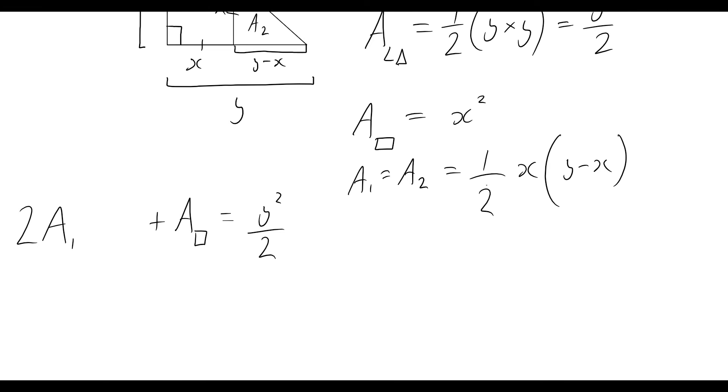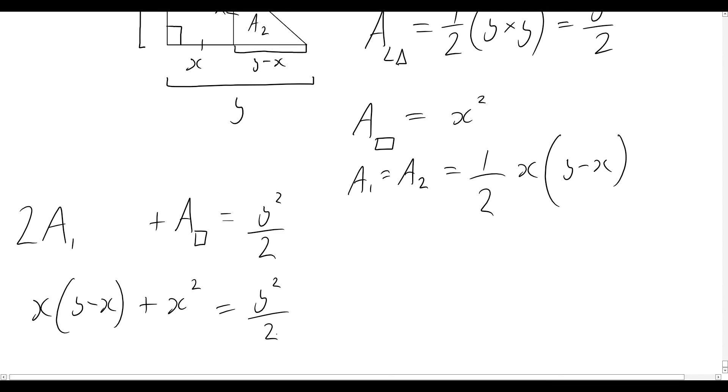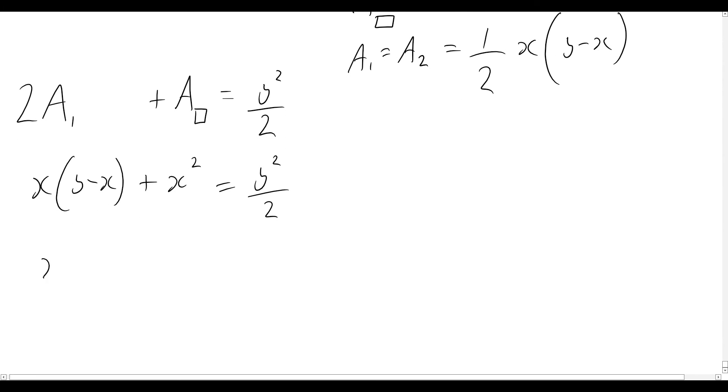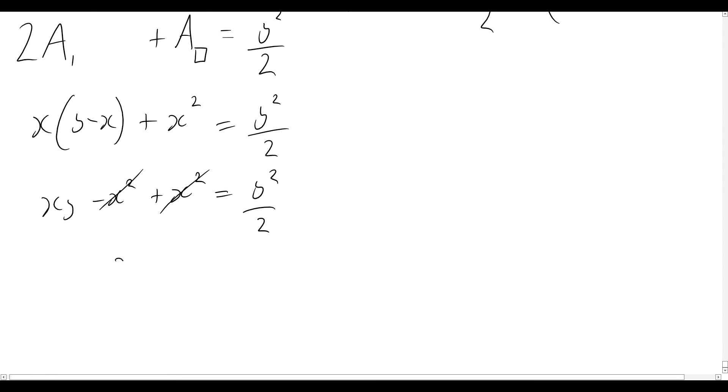So A₁, that's equal to ½x times (y - x). So 2 times ½, let's start filling this all out. So now we'll have 2 times ½, so that will disappear. Now it's just going to be x times (y - x), and then plus the area of the square, which is plus x². And that whole thing is equal to y²/2. Let's continue. So now let's expand this out, and we get xy - x² + x² = y²/2. So those clearly cancel out, and all we're left with is xy = y²/2. Divide both sides by y, and we get our final result saying that x must be equal to y/2.